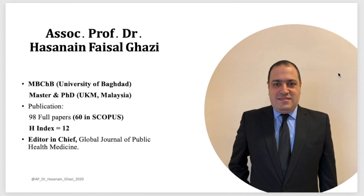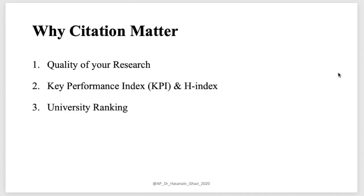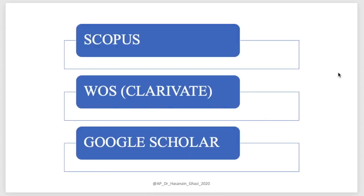So why does citation matter? Number one is the quality of your research — high citation means high quality research. We have the KPI and the h-index, which you need to increase. Nowadays citation also matters for university world rankings. There are three platforms to count your citations: Scopus, Clarivate Web of Science, and Google Scholar.